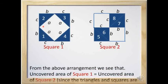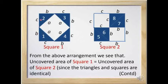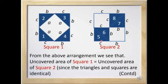We have two identical squares of side (b + c). We are going to arrange four identical right angle triangles in square one as shown in the figure, and the next four identical right angle triangles in square two as shown. The area occupied by the four right angle triangles in square one is equal to the area occupied by the four right angle triangles in square two, because all eight right angle triangles are identical. Therefore, the uncovered area in square one must equal the uncovered area in square two.